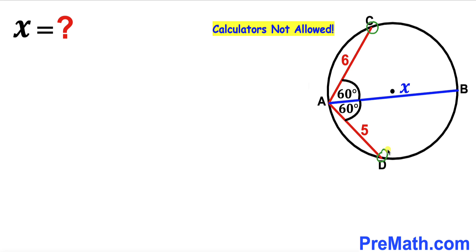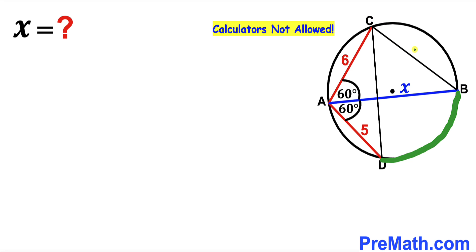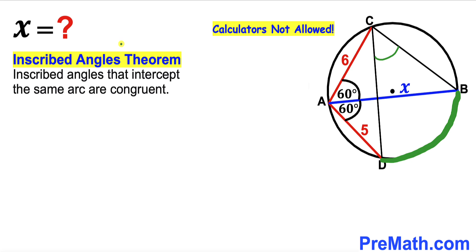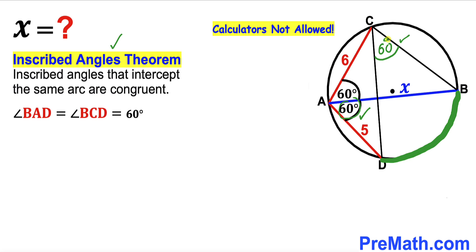Now let me connect points C and D to form chord CD. We can observe that the 60-degree angle BAD subtends arc BD. Next, connecting points B and C, we observe that angle BCD subtends the same arc BD as well. By the inscribed angles theorem — inscribed angles that intercept the same arc are congruent — angle BAD equals angle BCD. So if angle BAD is 60 degrees, then angle BCD is 60 degrees as well.